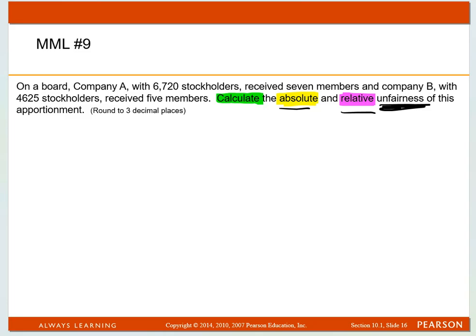In order to find the absolute unfairness, first I have to figure out the average constituency of these two companies. You've got Company A with 6,720 stockholders, and they received seven members on the board.